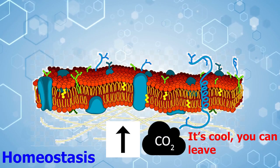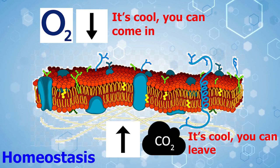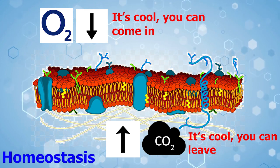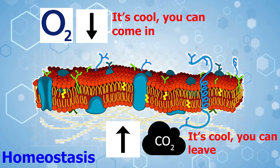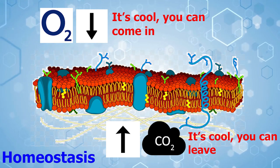Homeostasis means to have a stable internal environment, and that's exactly what the cell membrane does for the cell by controlling what comes in and out. Think about who you will and won't allow into your home — just like that, you are also a cell membrane ready to maintain homeostasis of your home.